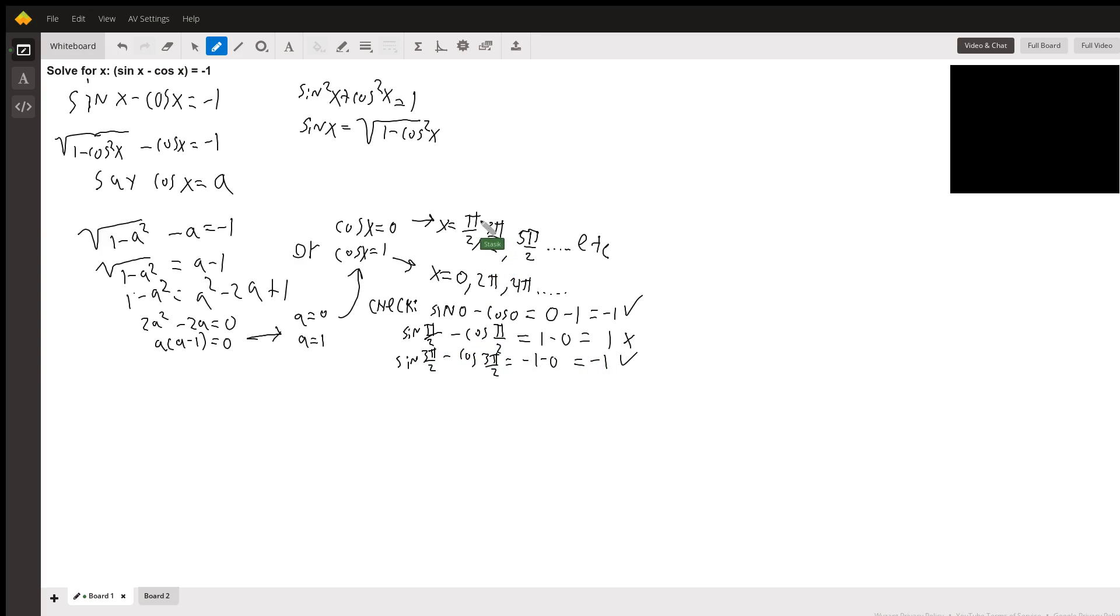So this solution doesn't work. And then finally, when we check three pi over two, we see that sine three pi over two minus cosine three pi over two is minus one minus zero, which is negative one, so this checks out.